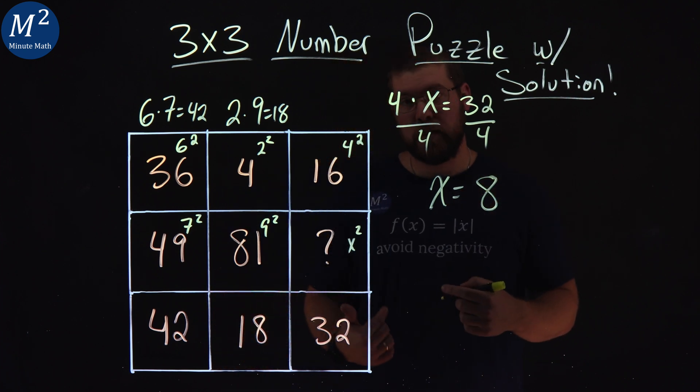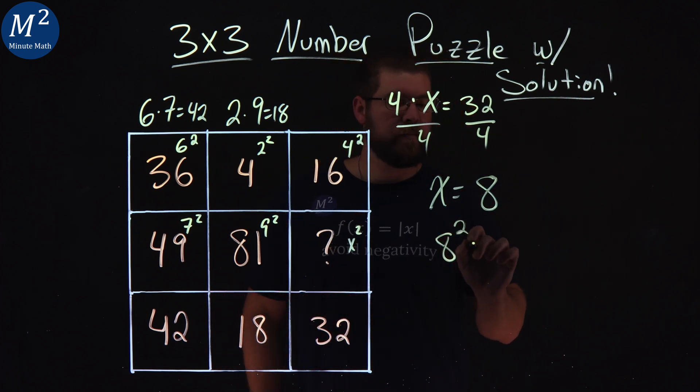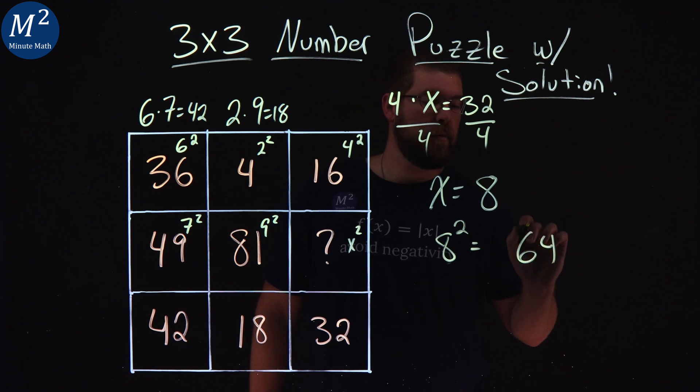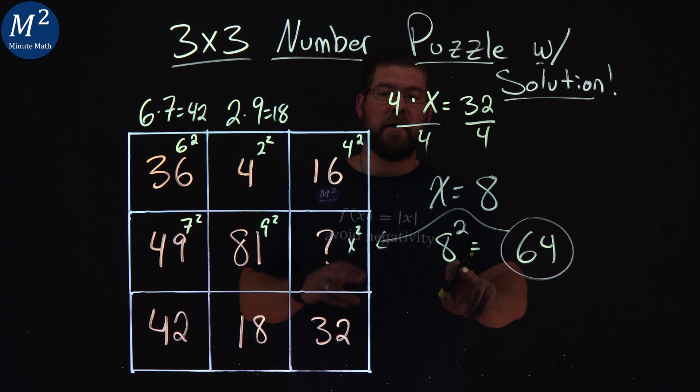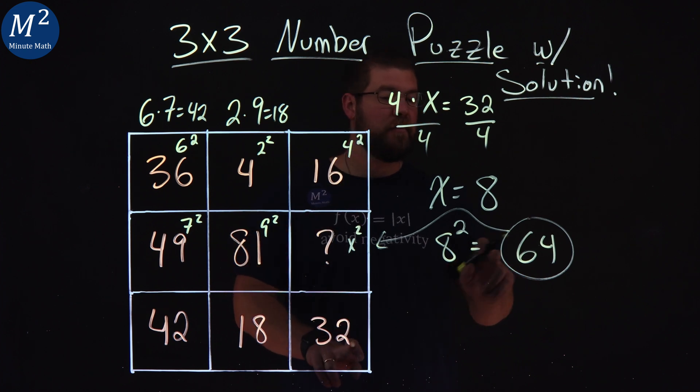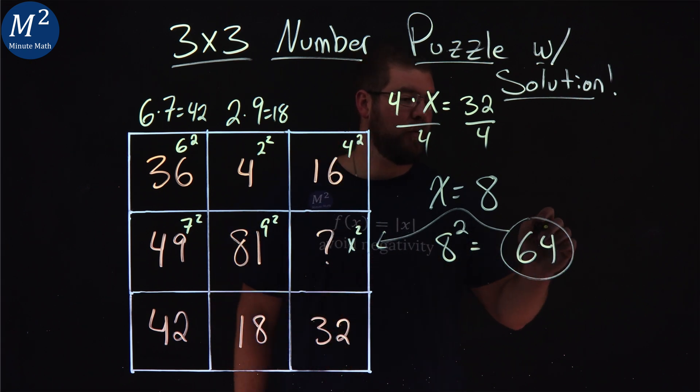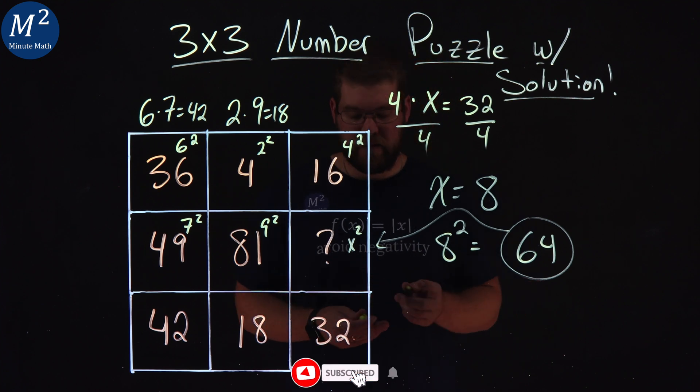And so, if our pattern continues, 8 squared is 64, and that's the number in the missing box. 8 squared, 4 times 8 gives me that 32. 8 squared is 64, so again, that number is 64 in the box.